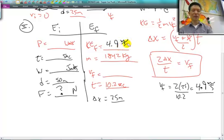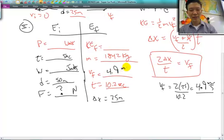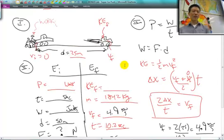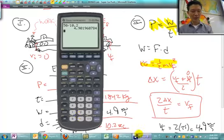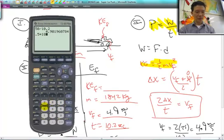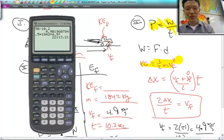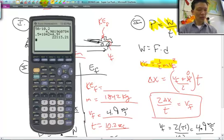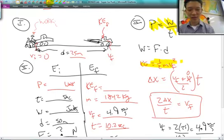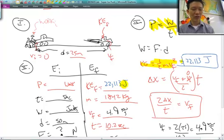So now, what can we actually figure out? That's the final velocity, right? We can now find the kinetic energy. We're trying to get power. Power is energy over time, work over time. The work done is equivalent to the kinetic energy. So to find KE, we just do one half the mass of 1,842 times the final velocity of 4.9 squared. And it's a crazy amount of kinetic energy. It's like 22,113 joules. 22,113 joules of kinetic energy.